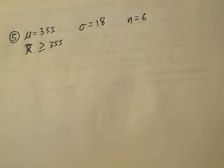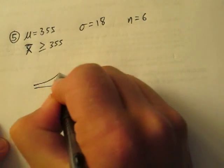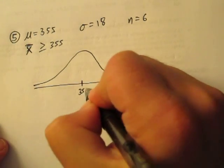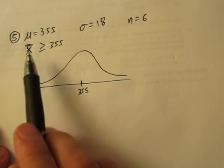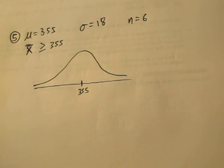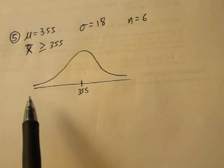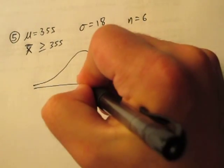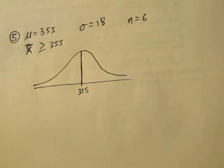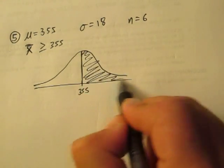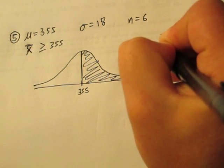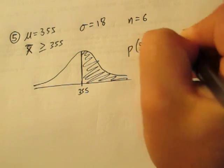This one you could actually get done pretty quick. If you draw a bell curve, the true mean is 355. What's the probability our sample mean is at least 355? The z-score you'd calculate here — because it's this value minus this value — is going to be 0. A z-score of zero is right down the middle, so the probability of at least 355 would be 0.5.